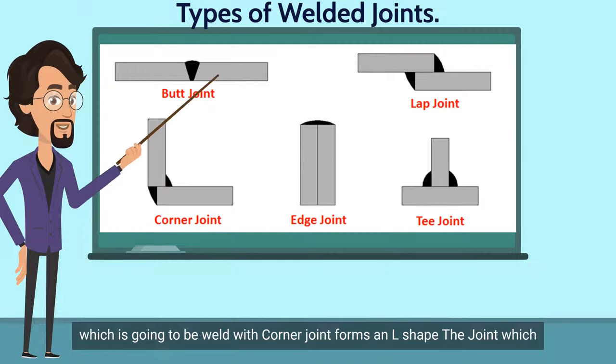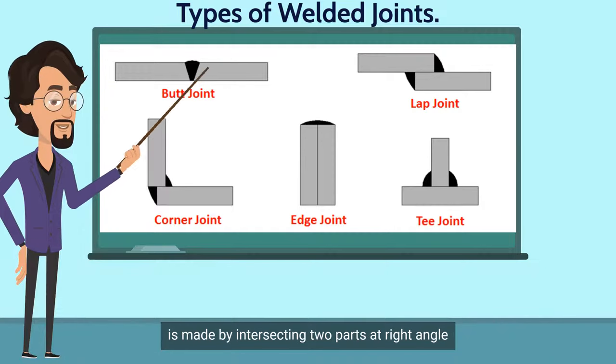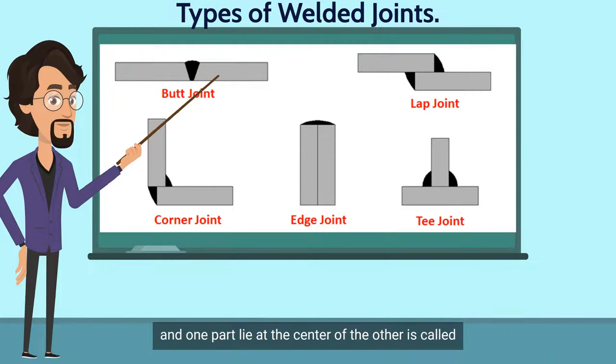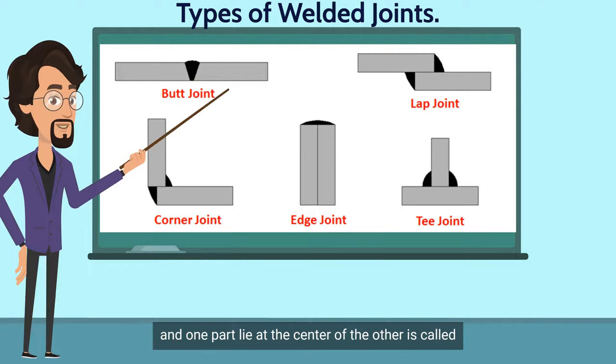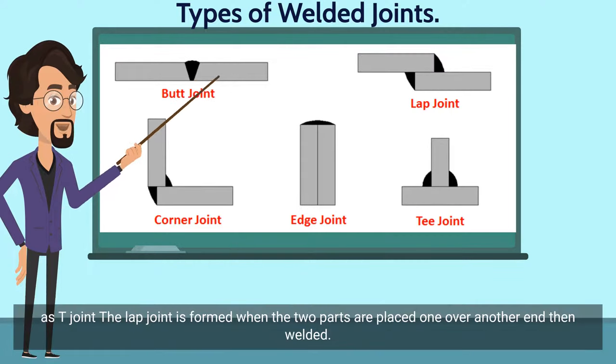The joint which is made by intersecting two parts at a right angle, where one part lies at the center of the other, is called a T-joint.